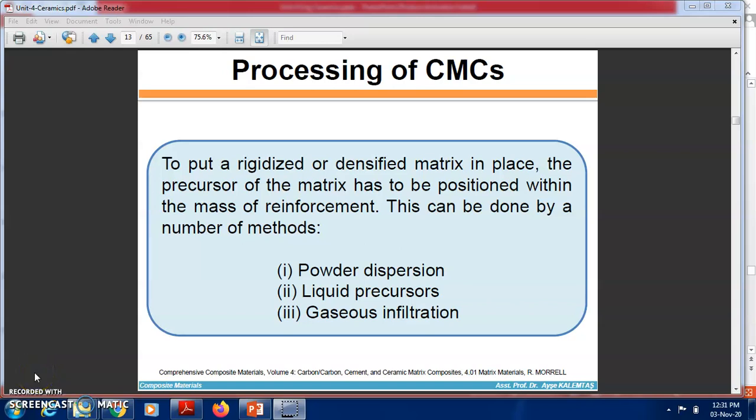In this video, we are going to see the processing of ceramic matrix composites. The first processes are for making the reinforcement. There are three methods: powder dispersion, liquid precursors, and gaseous infiltration. To put a rigidized or densified matrix in place, the precursors of the matrix have to be positioned within the mass of reinforcement. These three methods are for making the precursor matrix positioned with the mass of reinforcement.